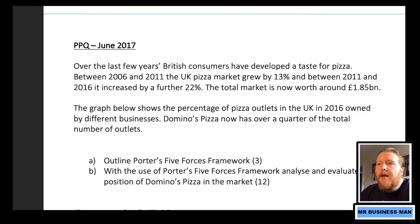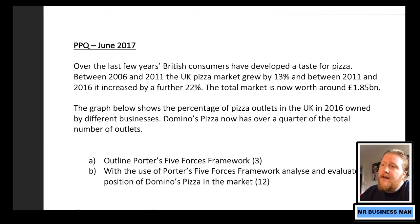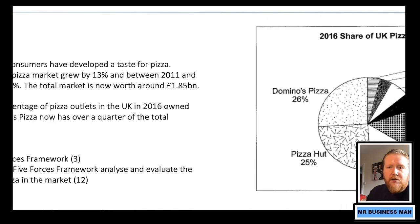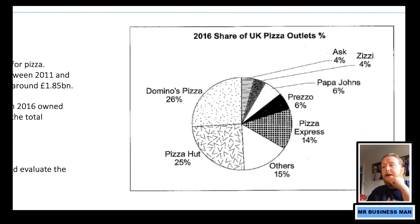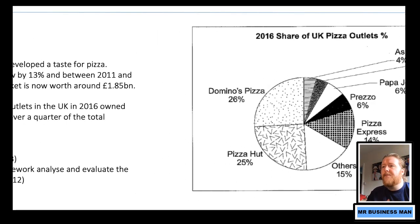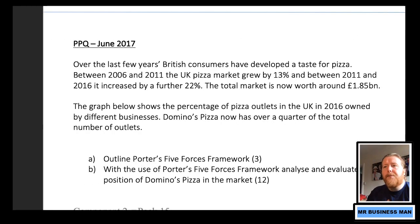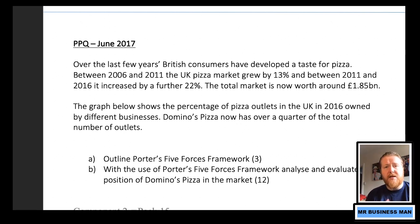Here's a past paper question. Over the last few years, British consumers have developed a taste for pizza. Between 2006 and 2011, the UK pizza industry grew by 13%, and between 2011 and 2016 it increased a further 22%. The total market is now worth around £1.85 billion. There's a graph showing the percentage of pizza outlets in the UK in 2016, owned by different businesses — Ask Italian, Zizzi, Papa John's, Prezzo, Pizza Express, Pizza Hut, and Domino's Pizza. Domino's Pizza dominance is quite significant.